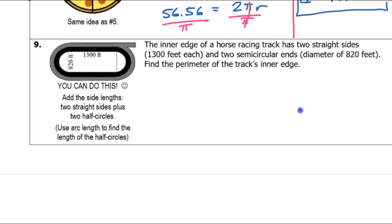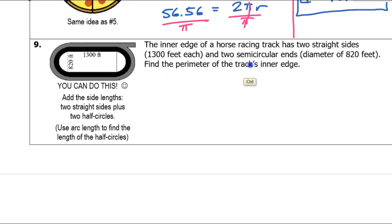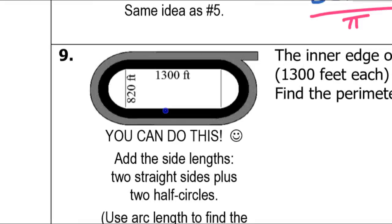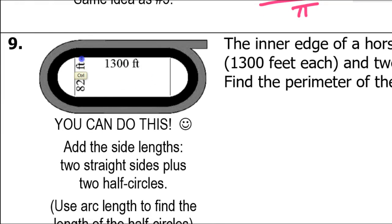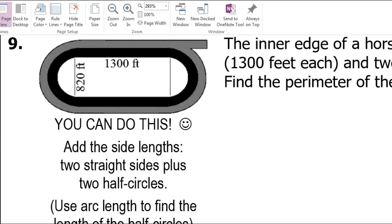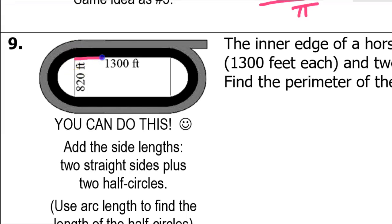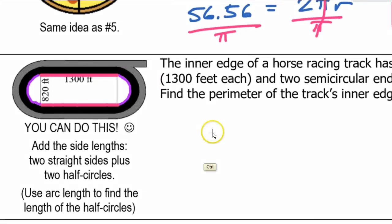That brings us down to the last problem. The inner edge of a horse racing track has two straight sides — 1,300 feet each — and two semicircular ends with a diameter of 820 feet. Find the perimeter of the track's inner edge. We're looking at two of the straight pieces and two of the curved pieces, and that'll be the perimeter.